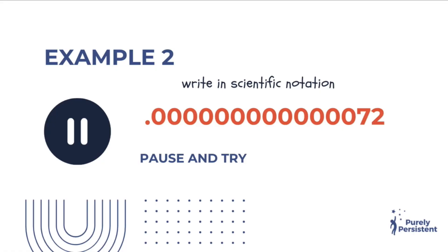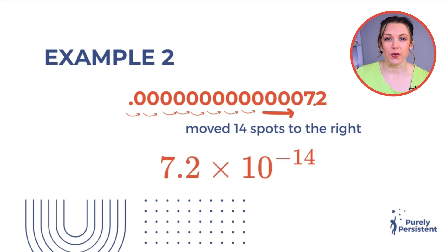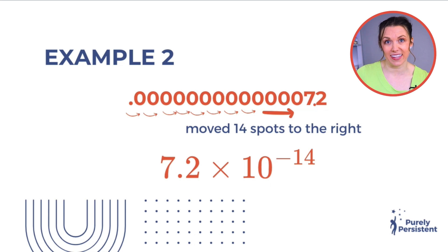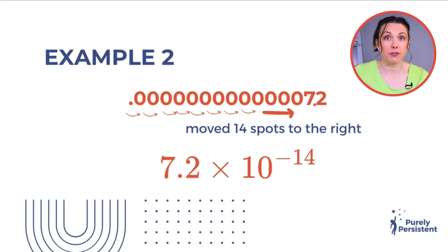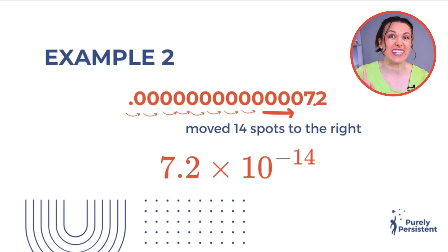Pause the video and try this one on your own. I moved it over 14 spots to the right, put my point between 7 and 2, so I have 7.2 times 10 to the negative 14. Remember, this negative is really important — if you forget the negative, then it's going to be a massive number, and we want it to be a really small number. So don't forget that negative.